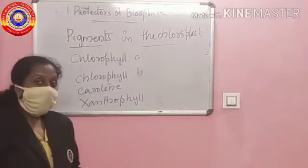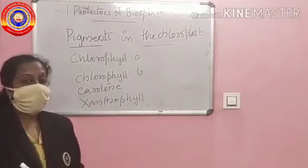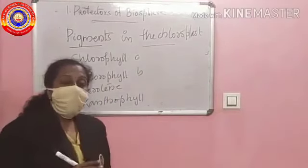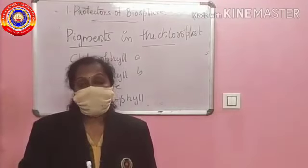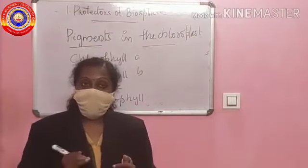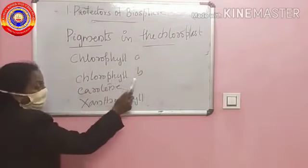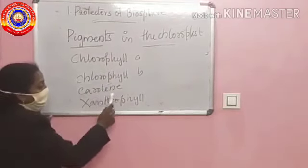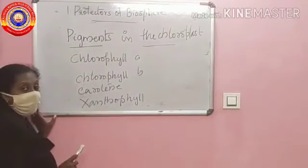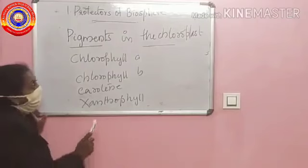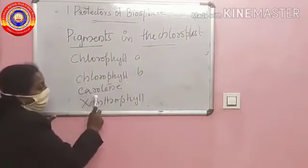Our next topic is pigments in the chloroplast. The pigments that absorb sunlight are seen in the grana. The pigments are chlorophyll A, chlorophyll B, carotene, and xanthophyll.